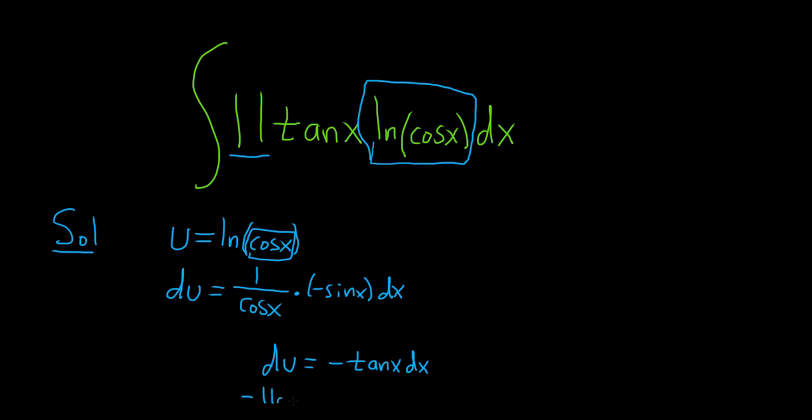So negative 11 du. Multiplying this side by negative 11 makes it a positive 11. Now we have precisely what we have in our integral. We have 11 tan(x) dx, which is just negative 11 du.